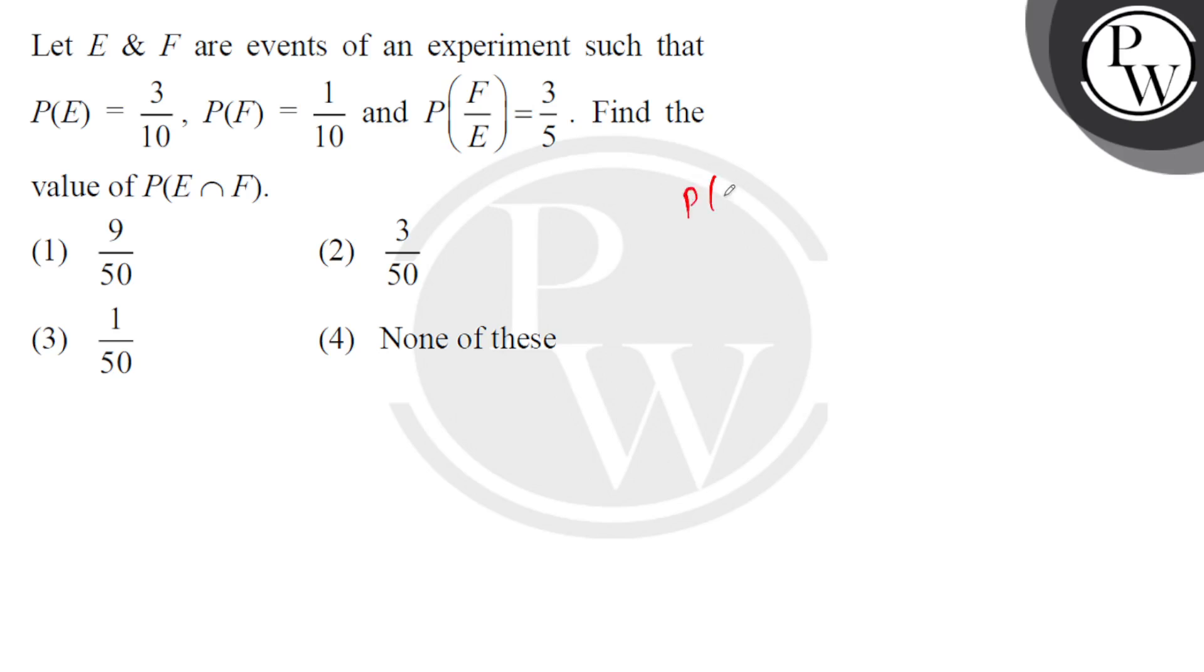So here we go. P(F intersection E) upon P(E) - that's conditional probability - and that is basically equals to 3/5. Now P(E)...